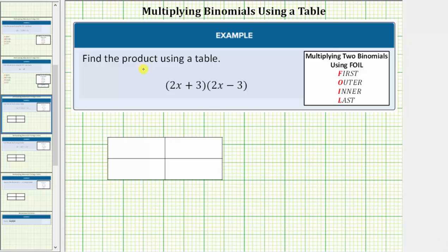We're asked to find the product using a table. Notice how we have a binomial times a binomial. When multiplying two binomials using a table, we begin with a two-by-two table as shown here.